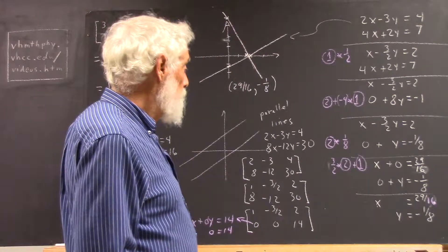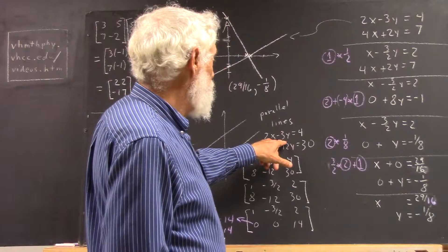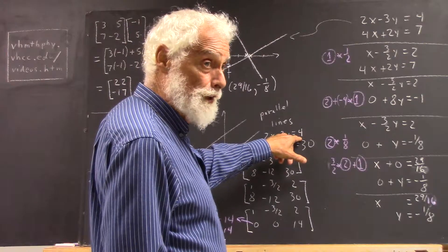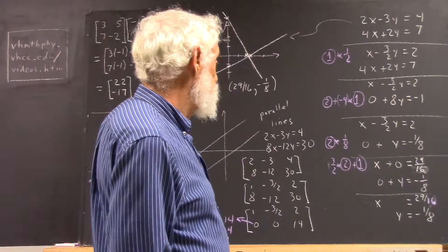Now, they're parallel because if you put either of these in slope-intercept form, you're going to find that you're going to have a negative 3y on this side and a negative 2x on this side. When you solve for y, you're going to have a two-thirds for your slope.